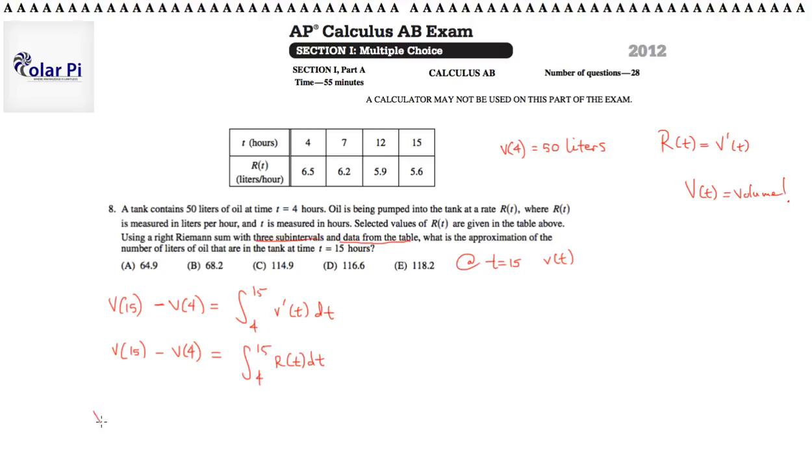Another way to get it, well, solving, let's finish. Solving for v of 15, we get v of 4, which we already know. It's 50 plus the integral from 4 to 15 r of t dt. It's added v of 4 to both sides in this last line.